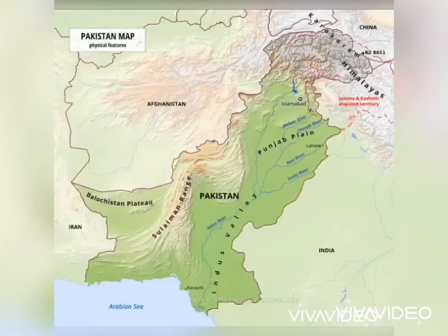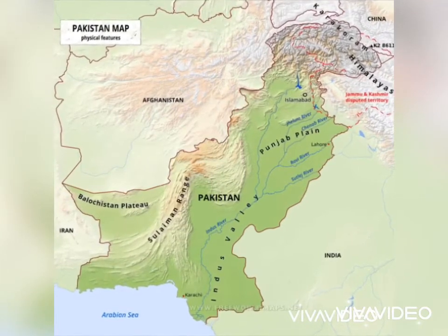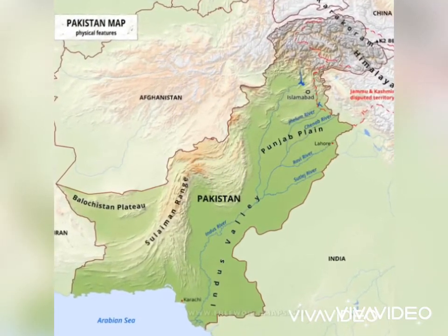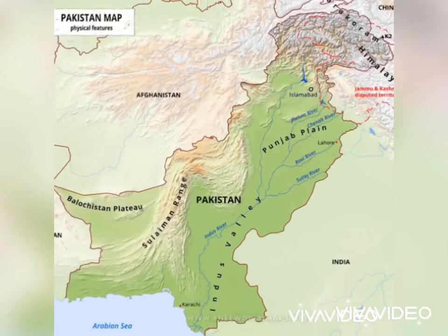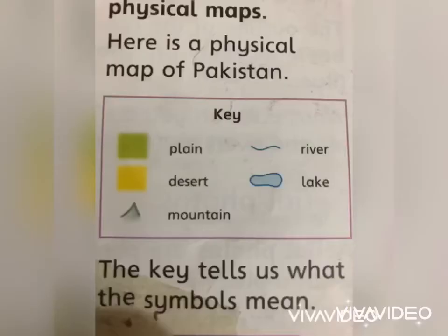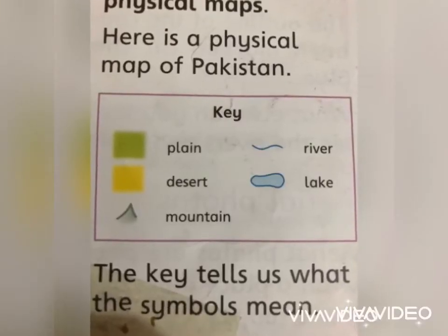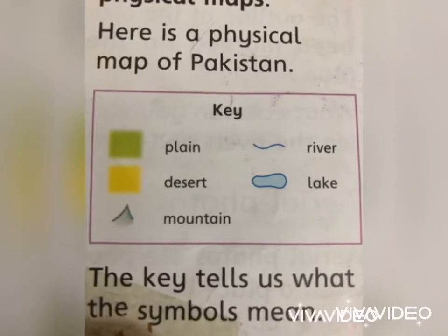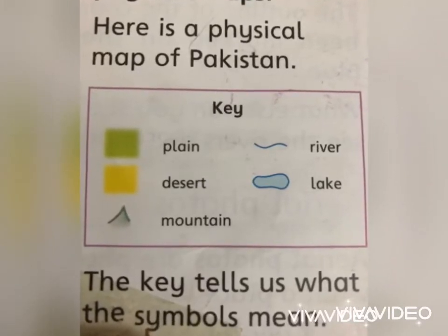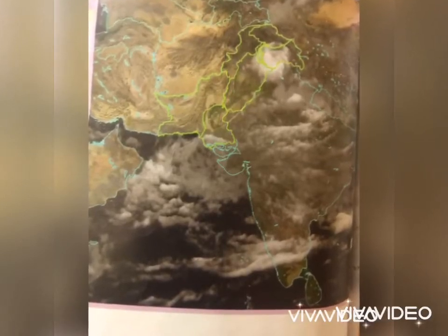In the key, there are different symbols for each category. Mountains have their own symbols, and rivers have their own symbols. So these symbols represent these things.